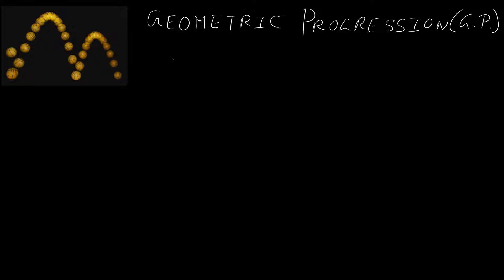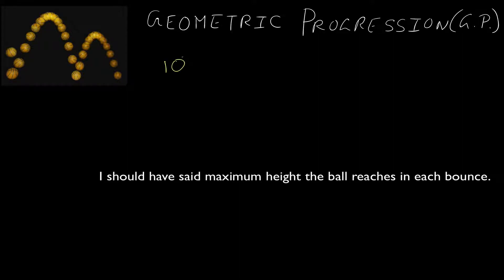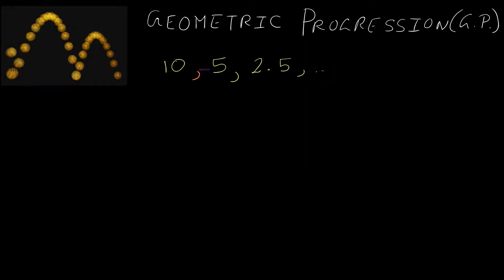Let's say you try something at home with a ball — you just bounce it and try to record the height it reaches on every bounce. Naturally, the first jump will be the highest, then the ball loses energy and the height keeps decreasing. Let's say the ball reaches 10 feet on the first jump, 5 feet on the second, 2.5 feet on the third, and so on.